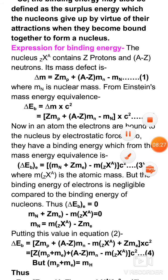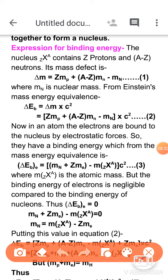Now we are going to derive the expression for binding energy. Some symbols and concept correlations are used here, which is the most important task. First we start with mass defect. For any element or nucleus with Z protons and A-Z neutrons, the mass defect is the already-derived relation: total mass of nucleons which is Z times Mp plus (A-Z) times Mn, where Mp is mass of proton and Mn is mass of neutron, minus the mass of nucleus MN. So this mass defect relation is our equation 1.